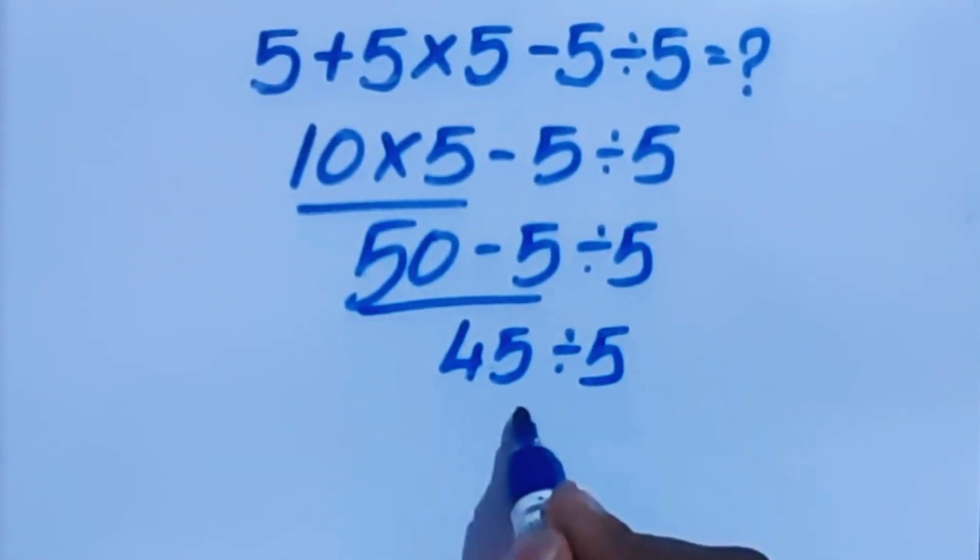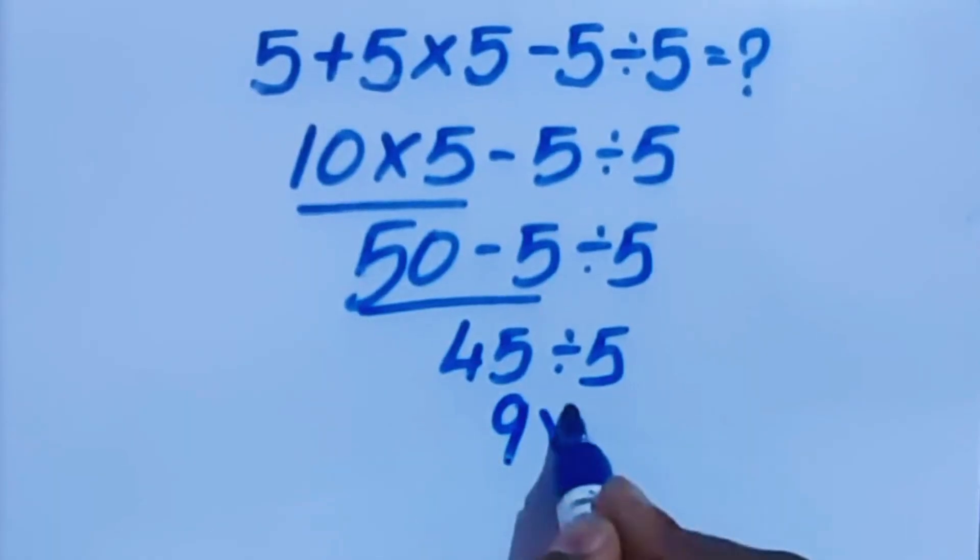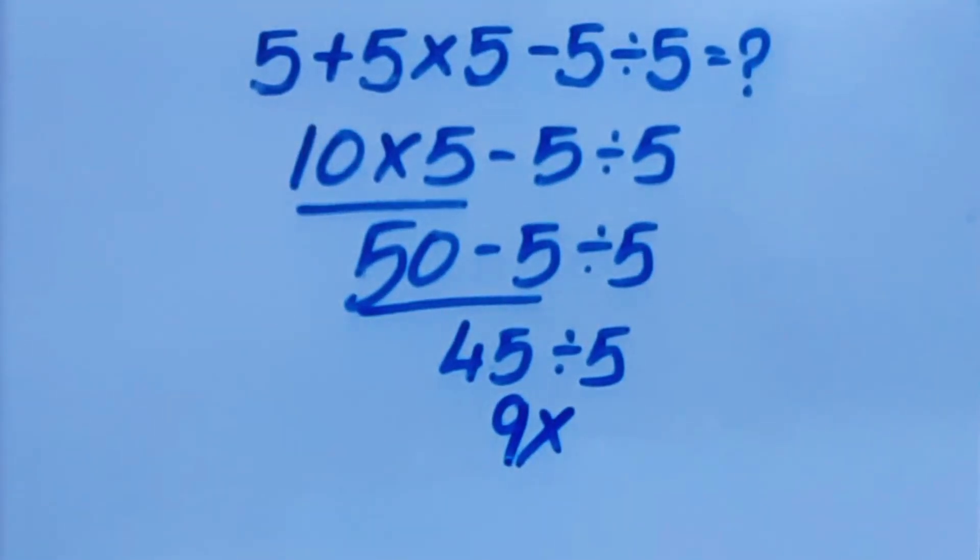45 divided by 5 is 9, which is the wrong answer. As per the order of operations, this 9 is the wrong answer.